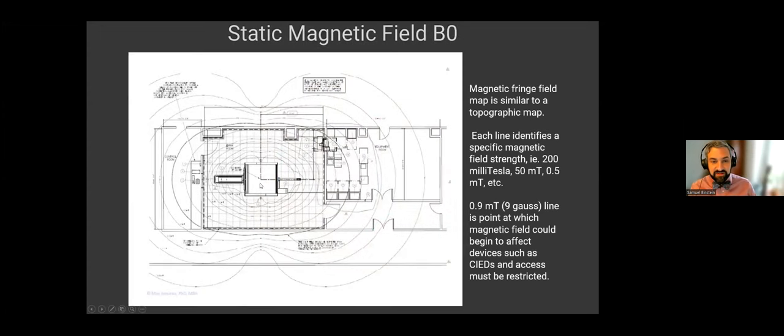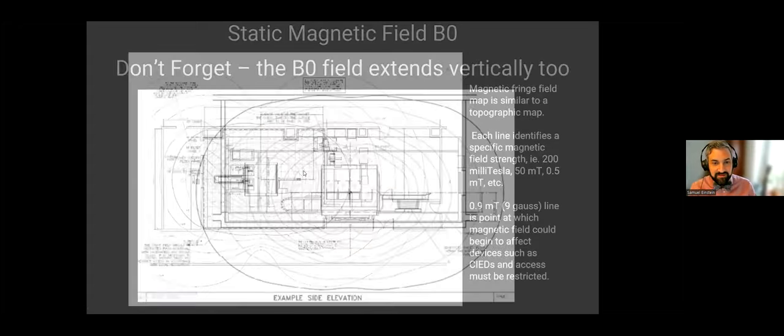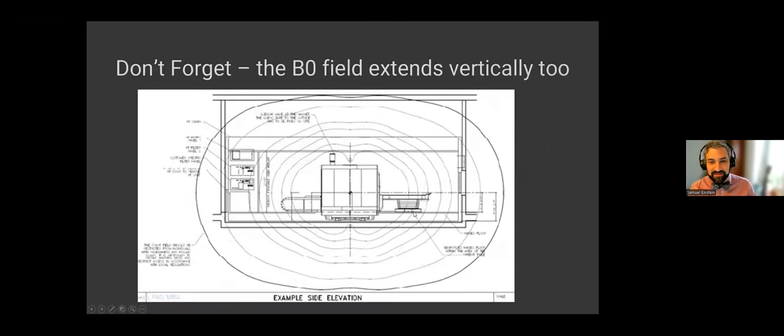And so, the static magnetic field B0, of course, is generated by the magnet. We use it to align all our protons in the patient. It is generally 1.5 or 3 tesla for most scanners. And this is a fringe field map. So, it's kind of like a topographic map here showing the field strength at different places. And again, we've actually switched from 5 gauss to 9 gauss line. And that's kind of the point where we are worried that it could interact with certain devices such as CIEDs or pain pumps or that sort of thing. And when thinking about B0 fields, keep in mind that they also extend vertically to the ceiling and down beneath the floor as well.